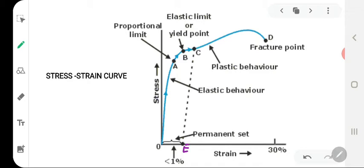So the initial part OA of the graph is a straight line indicating that stress is proportional to strain. Up to point A, Hooke's law is obeyed. That is the reason the point A is called the proportional limit. As you can see it is labelled clearly in the graph. In this region, the wire is perfectly elastic.